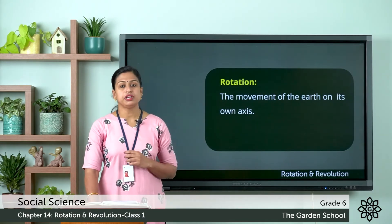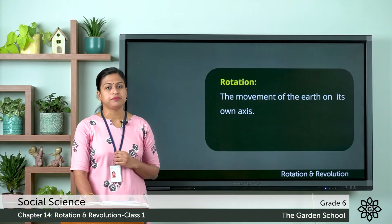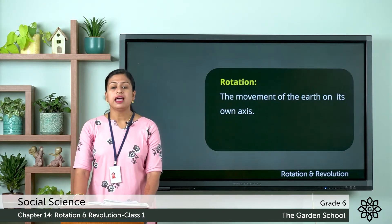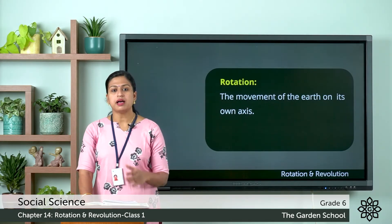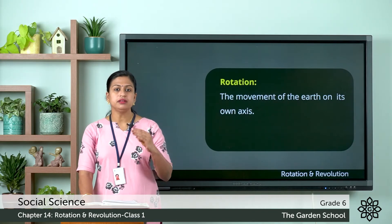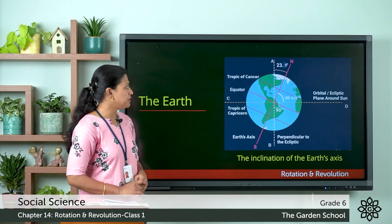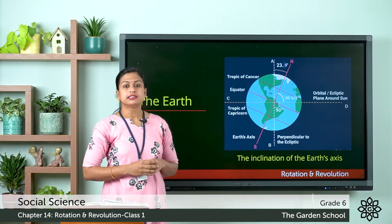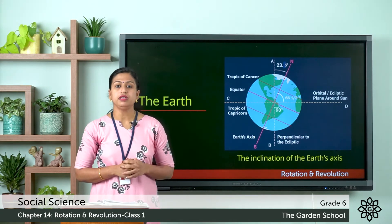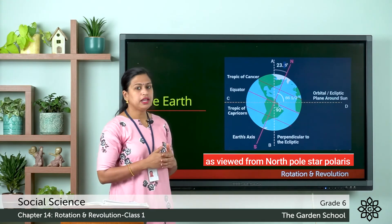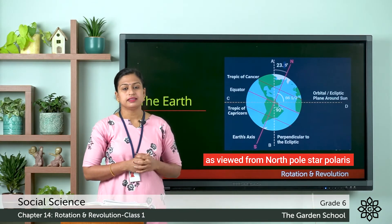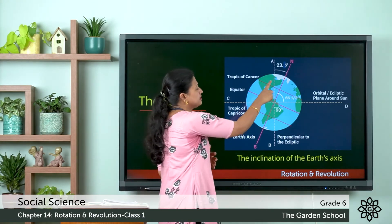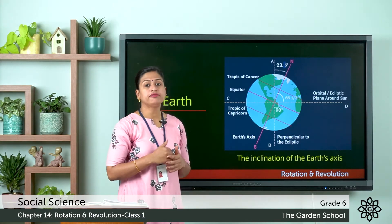First we'll discuss rotation. Rotation is the movement of the earth on its own axis. The axis is the imaginary line that passes through the centre of the earth connecting the north pole and the south pole. Here in this picture you can see the axis connecting the north and south poles passing through the centre. The earth rotates in a west to east direction, that is a counter-clockwise direction, on its own axis. The axis makes an angle of 23.5 degrees.